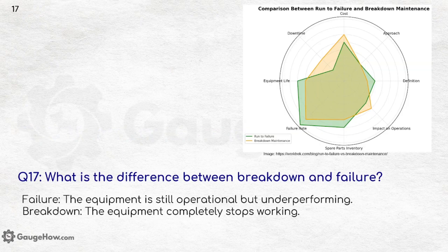What is the difference between breakdown and failure? Failure is when the equipment is still operational but underperforming, while breakdown means the equipment completely stops working.